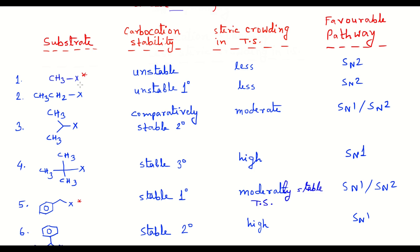The first entry is methyl halide. The carbocation from this system, CH3+, will be highly unstable, so SN1 is impossible. However, there are only three hydrogen atoms on the carbon, so the transition state for SN2 will be very favorable with very little steric crowding. That is why this molecule will always prefer the SN2 pathway.